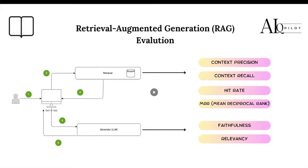Hi everyone. Welcome to this series of Generative AI code snippets. Today we are going to talk about Retrieval Augmented Generation, or RAG, and one of its main aspects, which is the evaluation of this system.